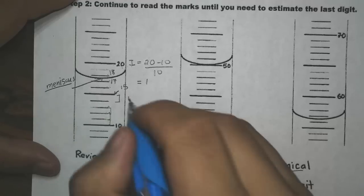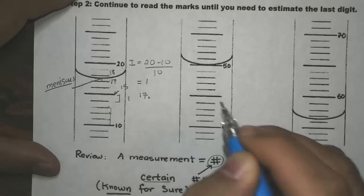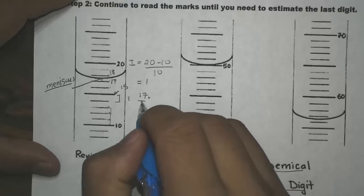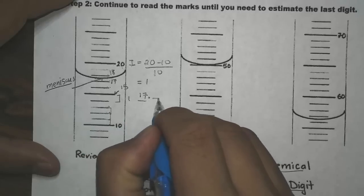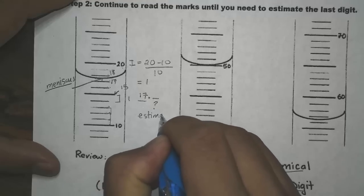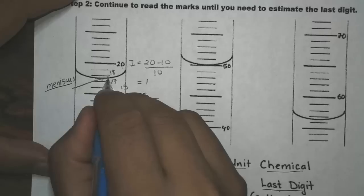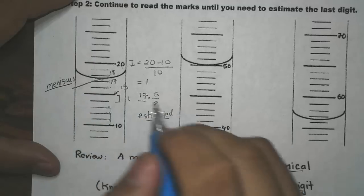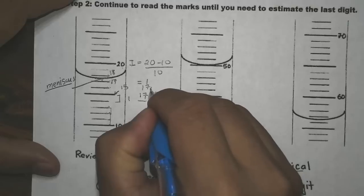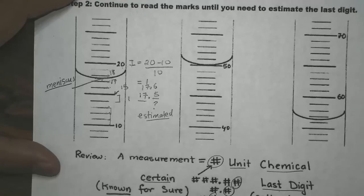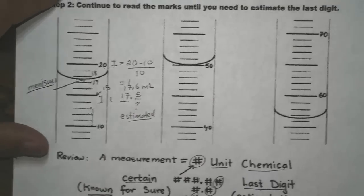Looking at the reading, we know for sure it is between 17 and 18, so this measurement must be 17 point something — not 18, because it doesn't pass 18 yet. The certain digit is 17, and the last digit is our estimated digit. So this could be 17.5 or 17.6 — those are all possible answers. The unit here is milliliter.